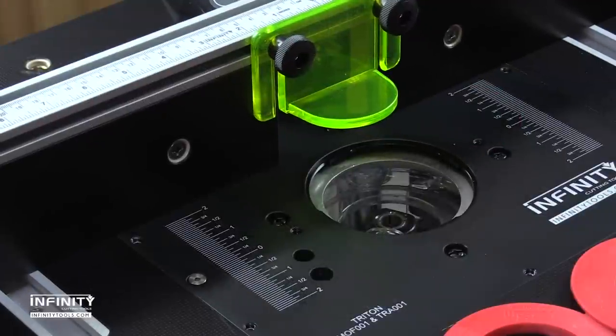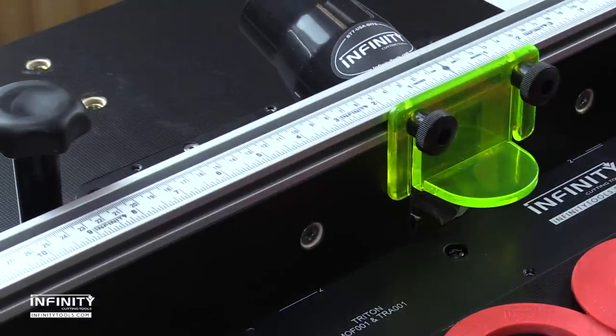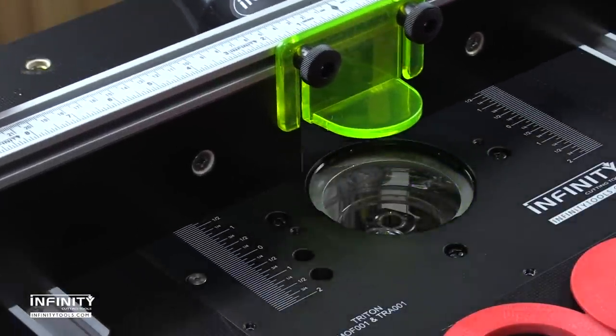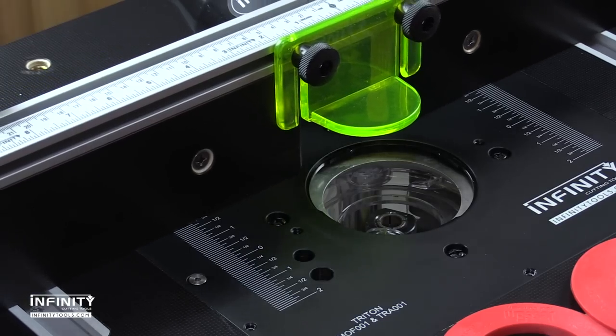Each plate is laser-marked with a pair of 4-inch long fence alignment scales, making it very easy to position the fence exactly where you need it.